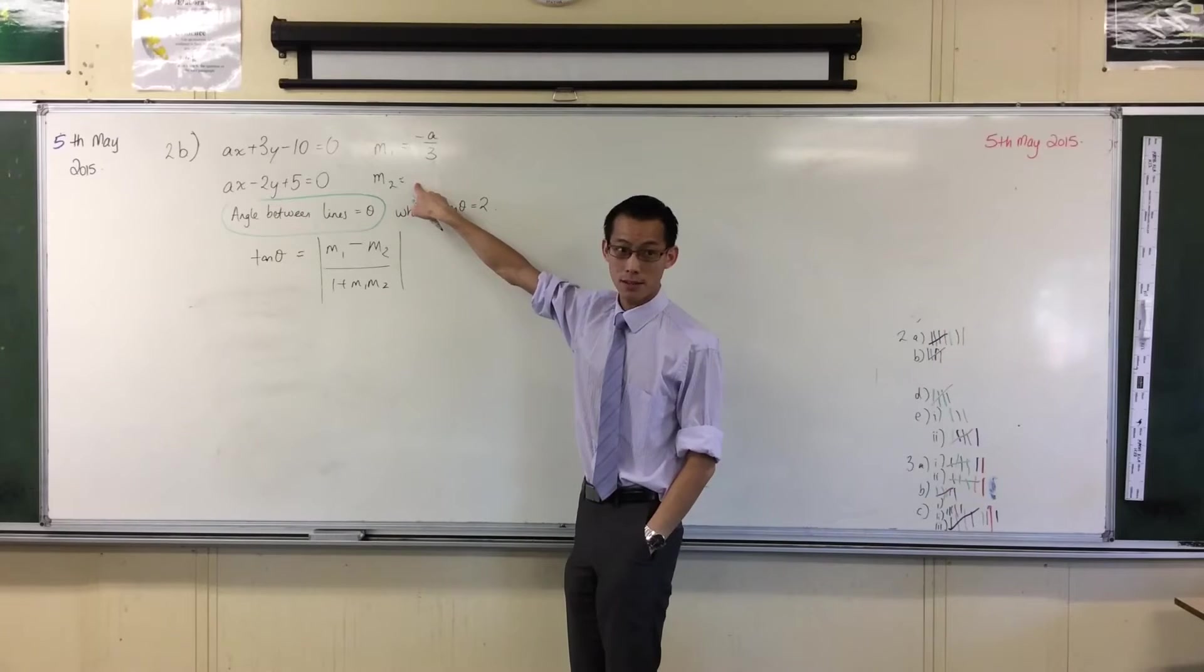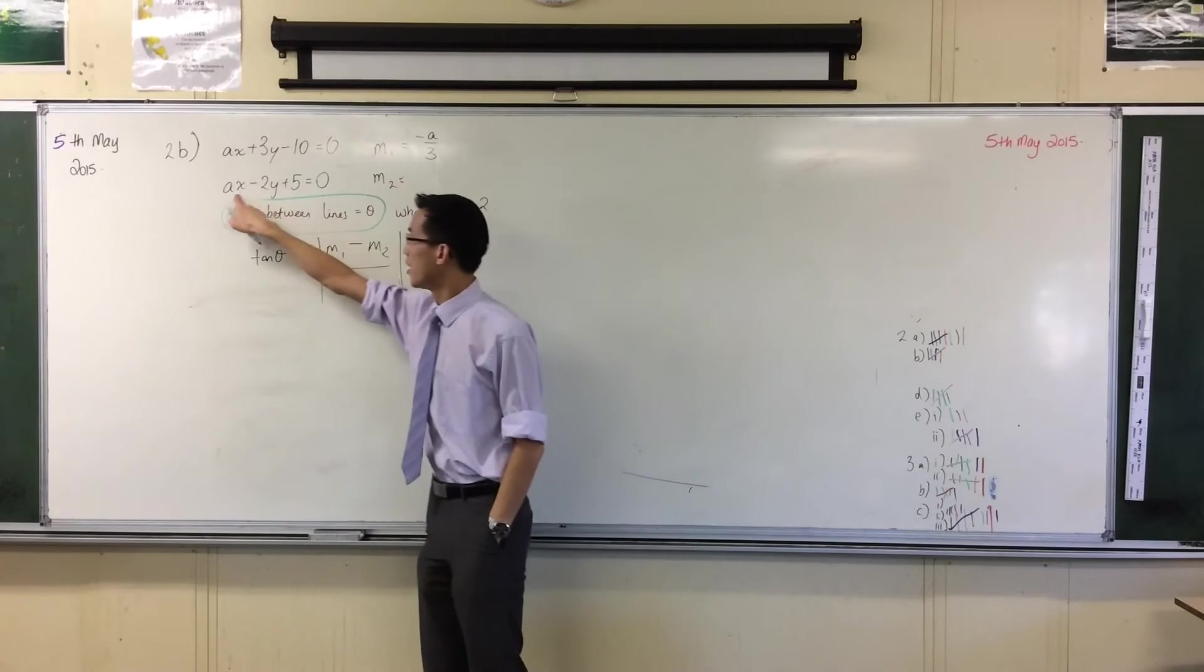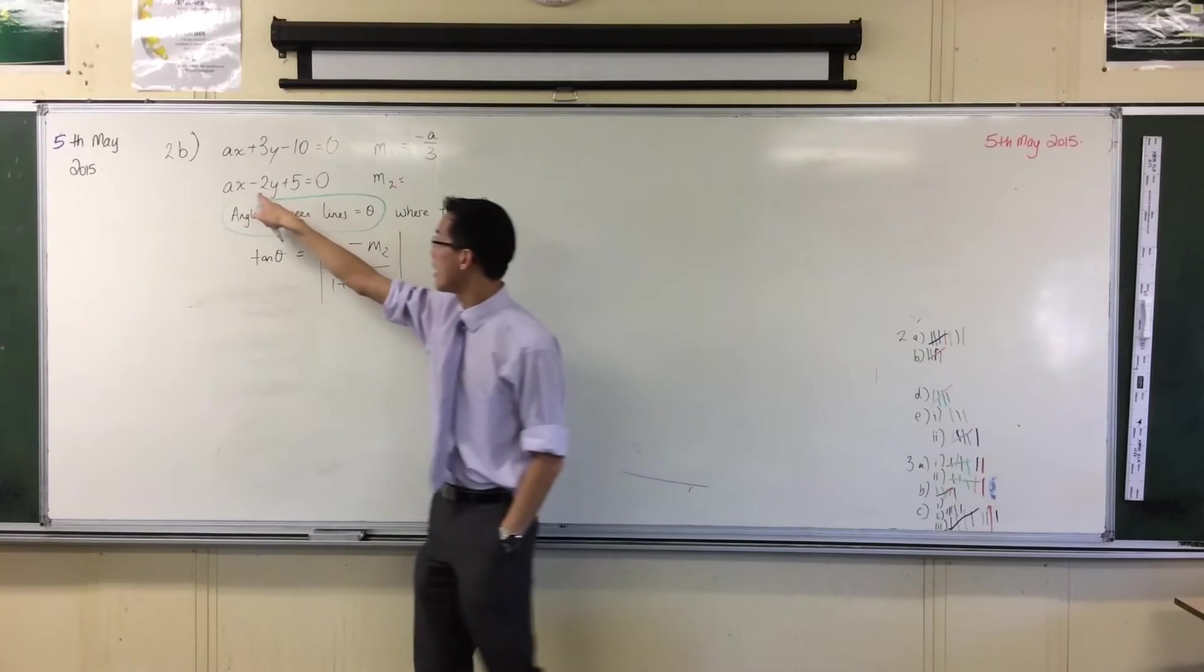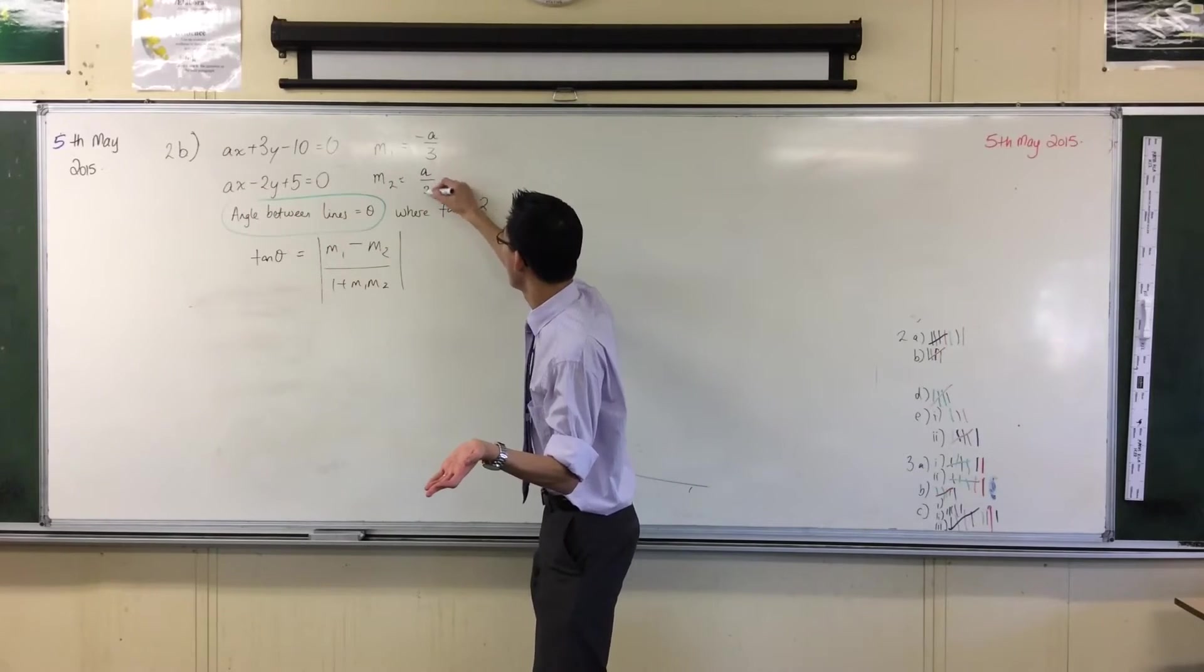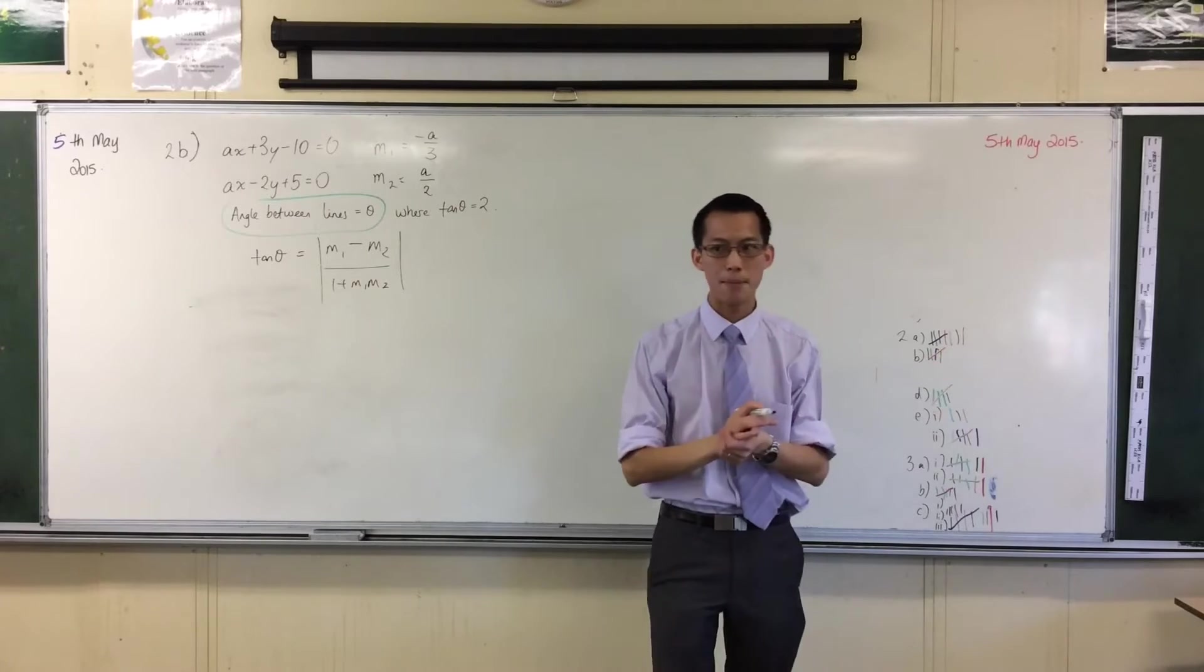In exactly the same way what gradient are you going to get out of this? Move this guy over it'll become minus ax and then you divide by minus two so the negatives cancel, so as you've just told me a over two.